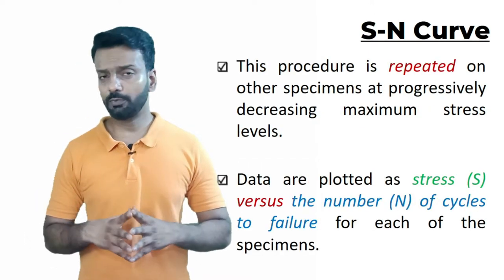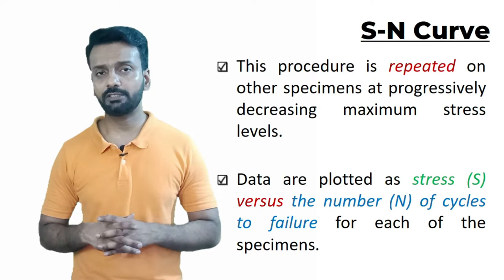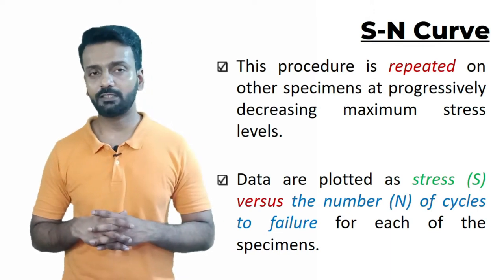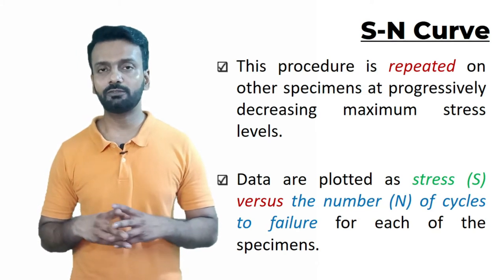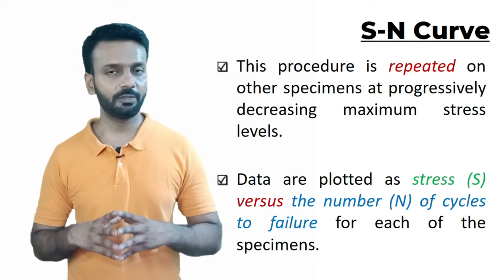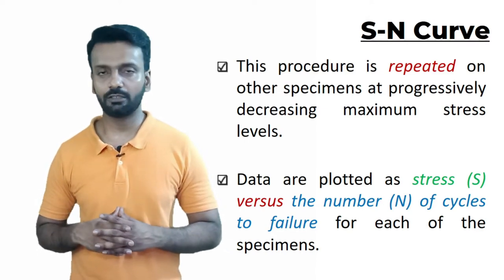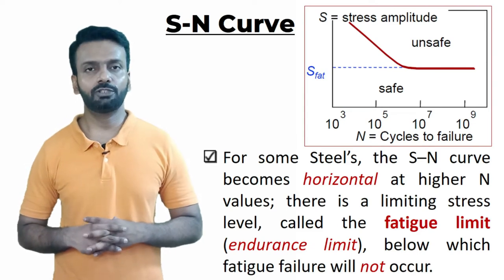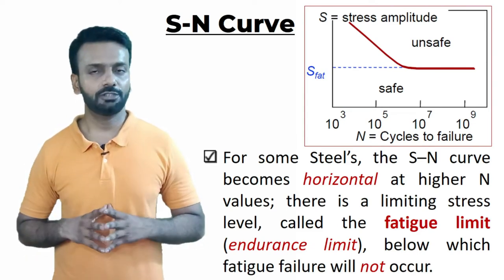This procedure is repeated on other specimens at progressively decreasing maximum stress levels. Data is plotted as stress versus number of cycles to failure for each specimen, and a curve is plotted which is known as the S-N curve.